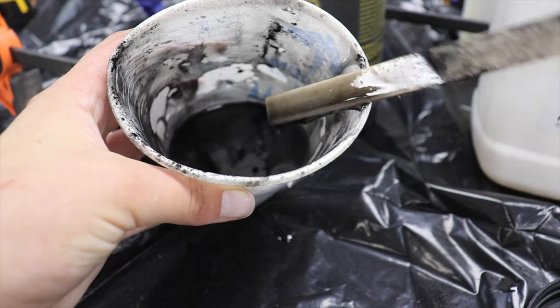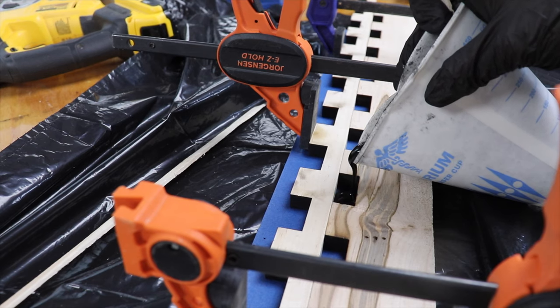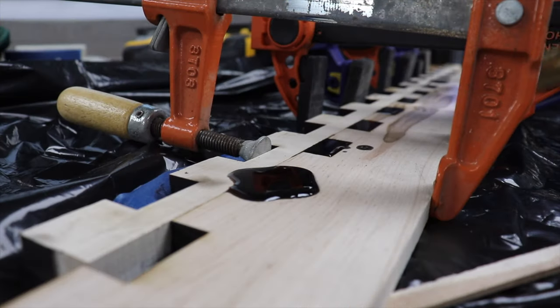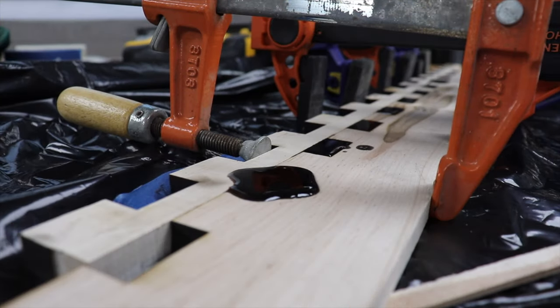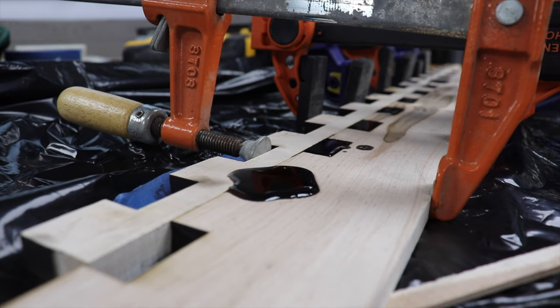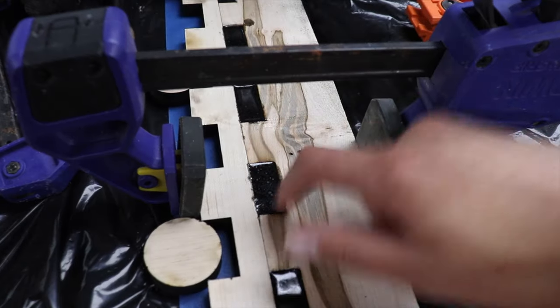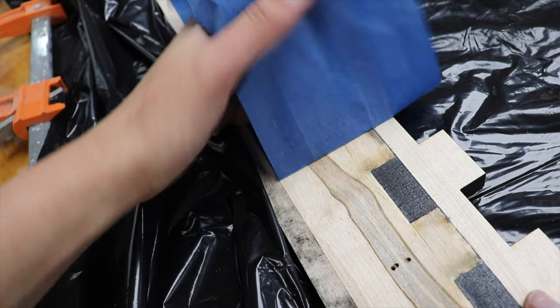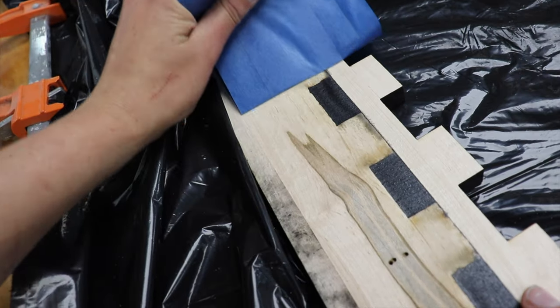I'm using Total Boat 2 to 1 epoxy because it has a bit of a thicker consistency so it's less likely to leak. It also hardens relatively quickly which I like. This pour worked out perfectly for me. I love this painters tape trick.